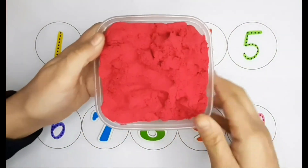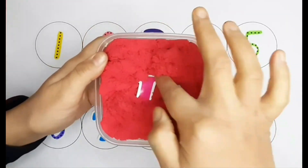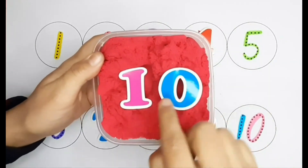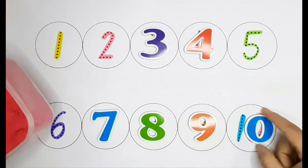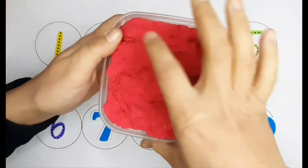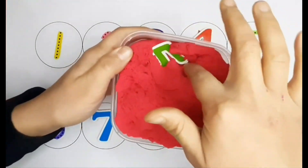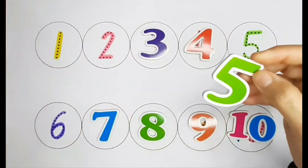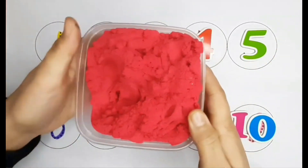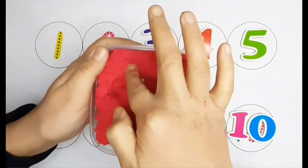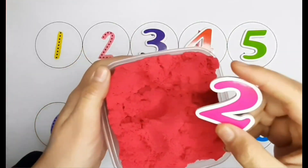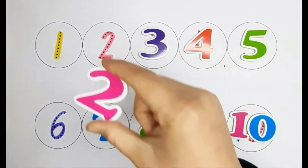No, with red sand. I wonder what next number will be. Number ten. Let's find it. Yes, that's right. Number ten. Let's see what number is hiding in sand. It's number 5. Can you help me to find it? That's right, number 5. Let's see what number is hiding in sand. It's number 2. Can you help me to find number 2? Yes, that's right.